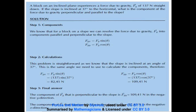As the worked example question suggests, a block on an inclined plane experiences a force due to gravity, Fg, of 137 Newtons straight down. If the slope is inclined at 37 degrees to the horizontal, what is the component of the force due to gravity perpendicular and parallel to the slope?